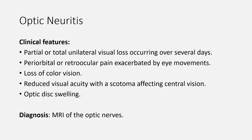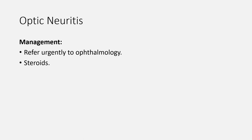Now let's move to optic neuritis. Optic neuritis is inflammation of the optic nerve. By far the most common form is idiopathic, which is a primary demyelinating disease occurring in isolation or as part of multiple sclerosis. Clinical features include partial or total unilateral visual loss occurring over several days, periorbital or retroocular pain exacerbated by eye movements, loss of color vision, reduced visual acuity with scotoma affecting central vision, and optic disc swelling. For diagnosis, MRI of the optic nerves is done. For management, refer the patient urgently to ophthalmology; treatment is usually with corticosteroid therapy.